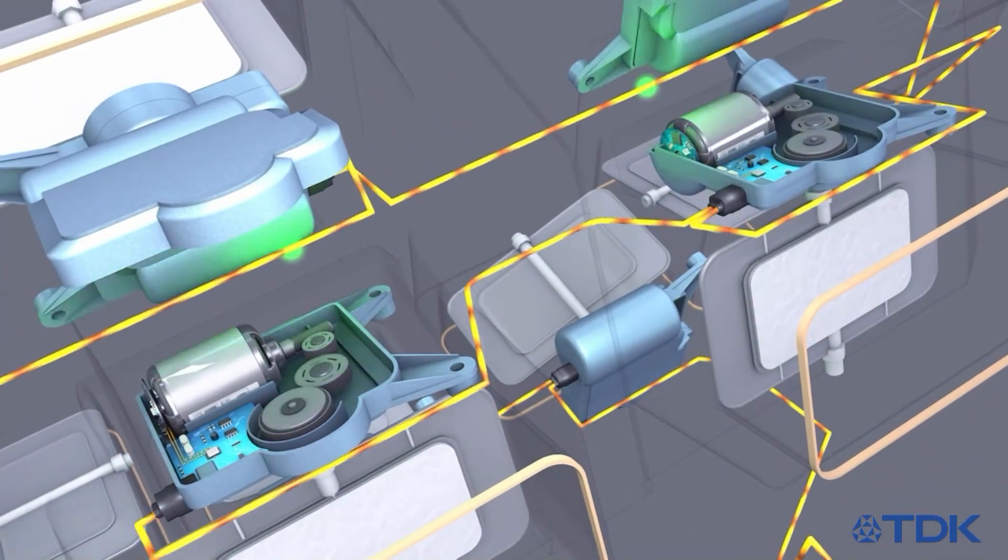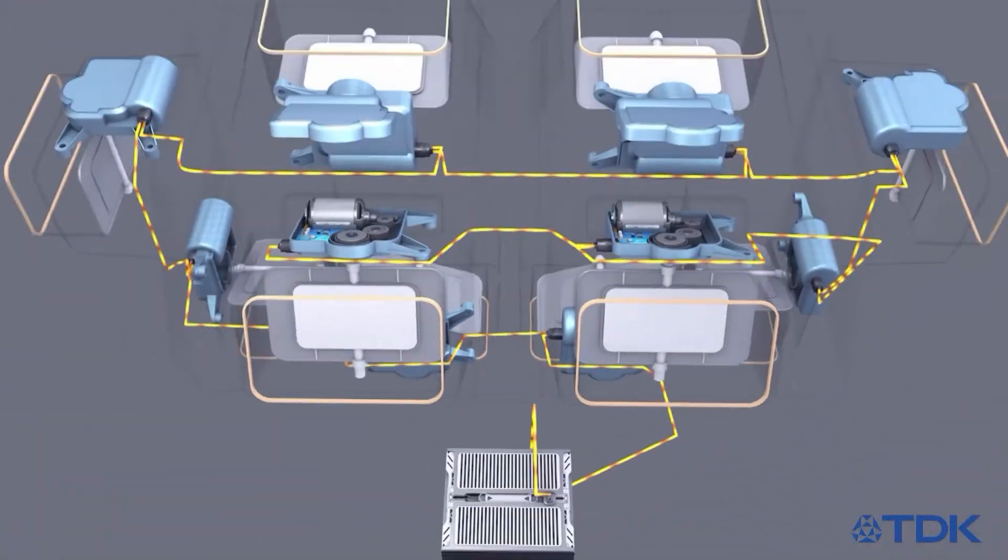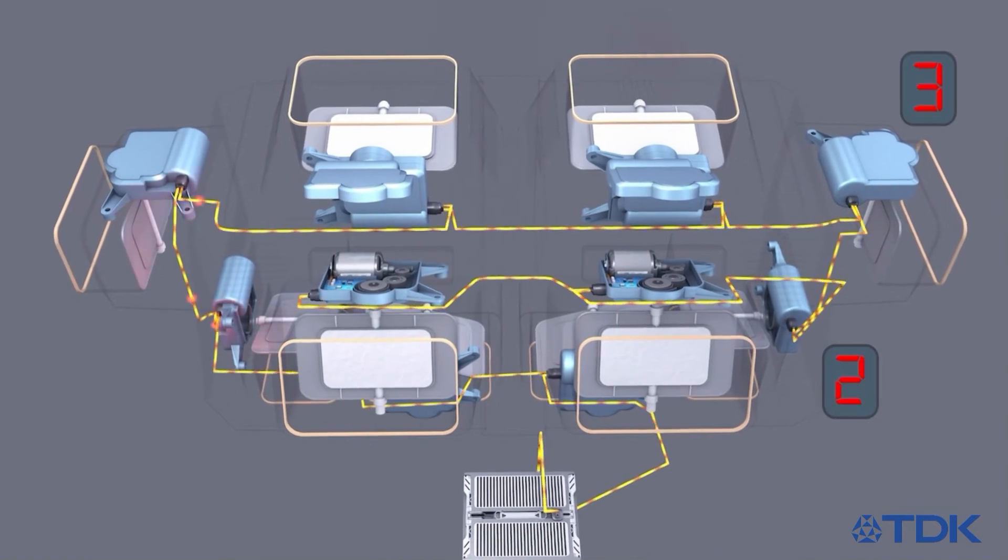The auto-addressing feature allows dynamic addressing of the individual actuators after they have been installed. Identical actuators receive their individual address depending on their position on the LIN bus.